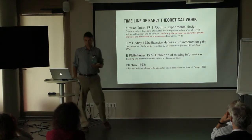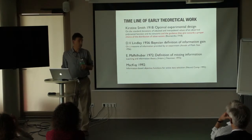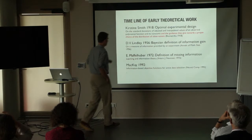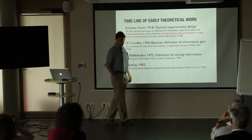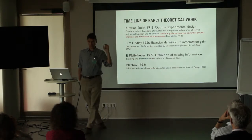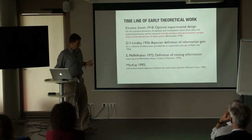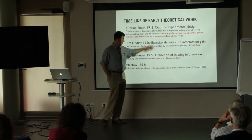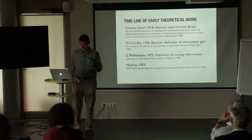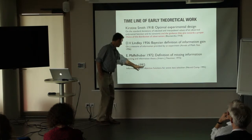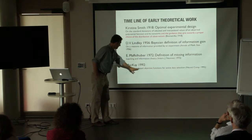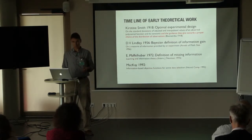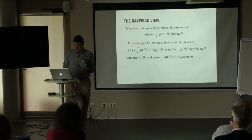Following Shannon, the first work bringing information theory into optimal experimental design is by D.V. Lindley at UCL in London, who made the first definition of information gain. Then there was Pfaffelhuber in Germany, who defined missing information — very closely related to information gain — and applied this to learning synaptic rates in the early 70s. Last but not least, David McKay in 1992 wrote a paper on optimal experimental design using Bayesian information gain, which was later used by Schmidhuber in agents.